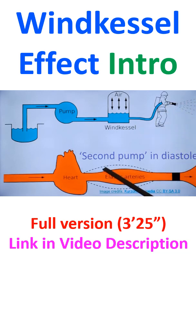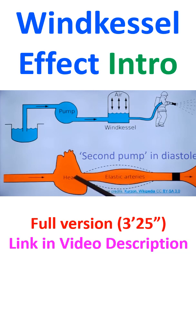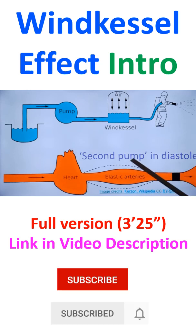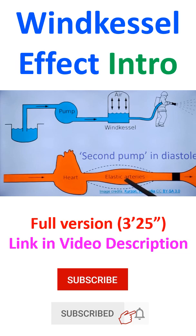A similar thing occurs in elastic arteries like the aorta. During systole, more blood enters the aorta than what leaves it, because the aorta expands. This additional blood received during systole is then released during diastole.